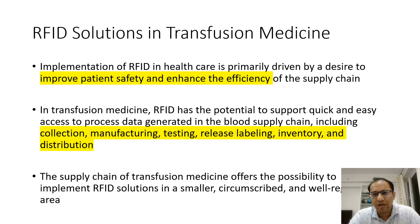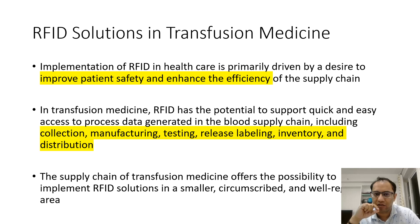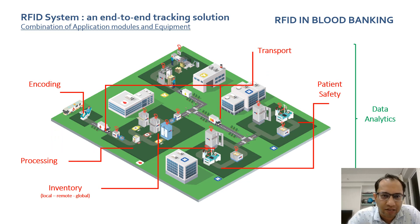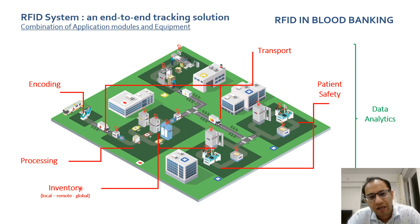Coming to RFID in transfusion medicine, what does an RFID solution mean here? Basically it is the implementation of RFID in healthcare with a desire to improve patient safety and enhance the efficiency of the supply chain. In transfusion medicine it has the potential to support quick and easy access to process data including collection, manufacturing, testing, release labeling, inventory, and distribution — providing a pictorial end-to-end system from encoding through transport, processing, inventory management, and all the way to patient safety with a vein to vein link.